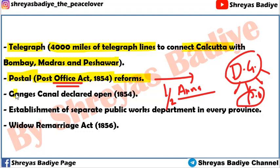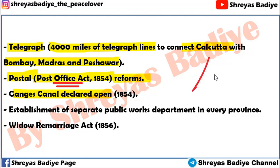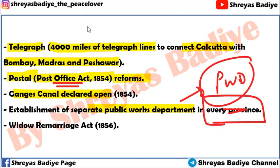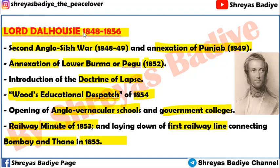Dalhousie also opened the Ganges Canal, which irrigated the region between the Ganga and Yamuna rivers. He established a separate Public Works Department for every province to ensure better development — the PWD department was created under him. The most significant social reform was the Hindu Widow Remarriage Act of 1856, which legally permitted widows to remarry, something that was previously not allowed in Indian society.